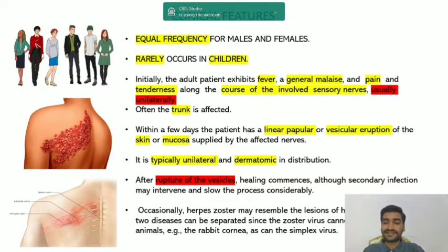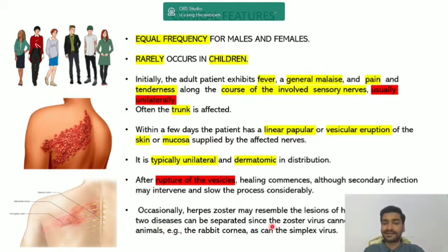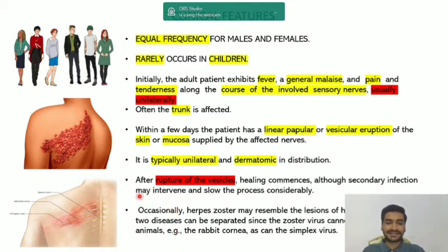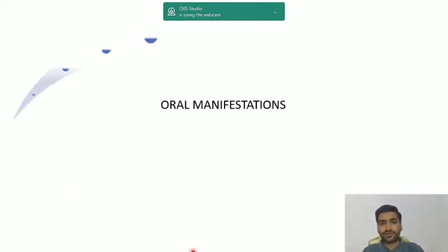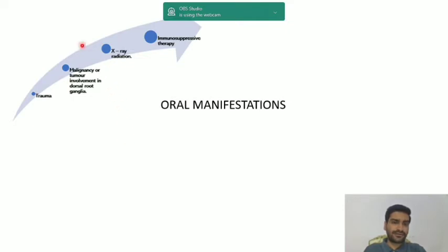Occasionally herpes zoster may resemble the lesions of herpes simplex - both show fluid-filled vesicles that rupture. However, the two diseases can be separated since the zoster virus cannot be transmitted to animals. Herpes simplex spreads through direct contact, but herpes zoster does not spread through direct contact.